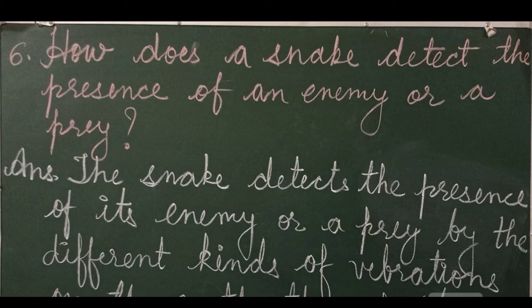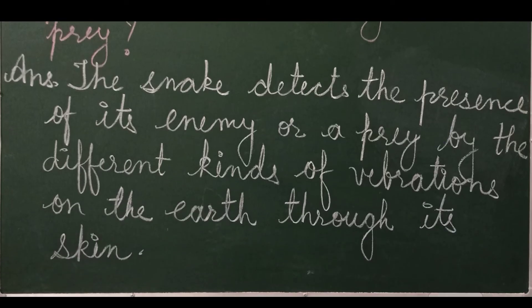Question 6: How does a snake detect the presence of an enemy or a prey? Snake apni enemy ya shikaar ke presence ko kaise detect karta hai? Answer: The snake detects the presence of its enemy or prey by the different kinds of vibrations on the earth through its skin — not by hearing. It detects the presence of its enemy through its skin.